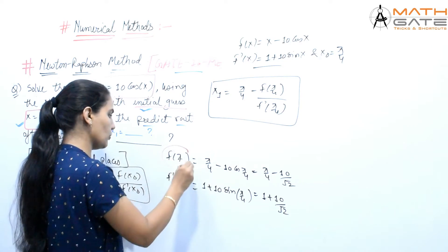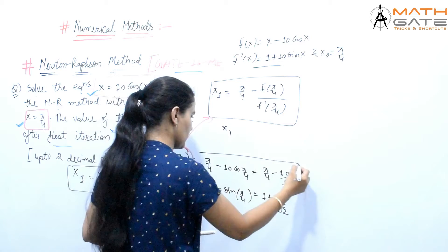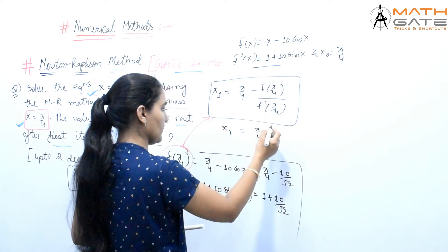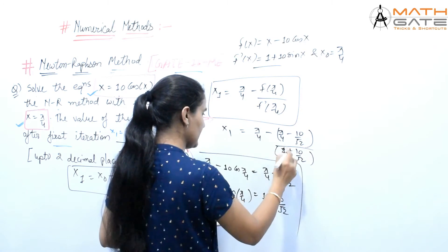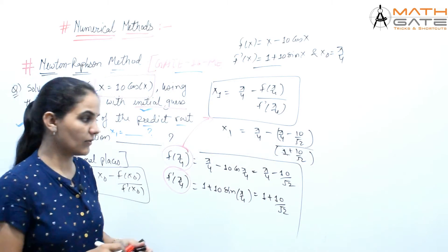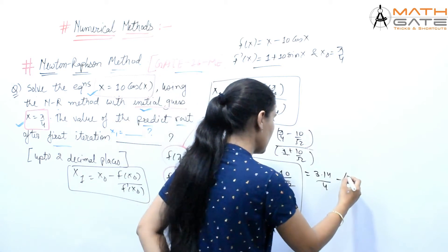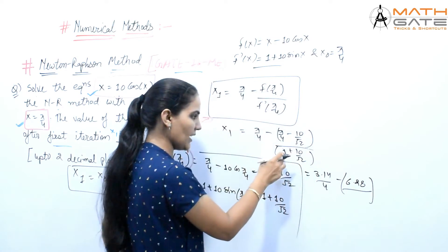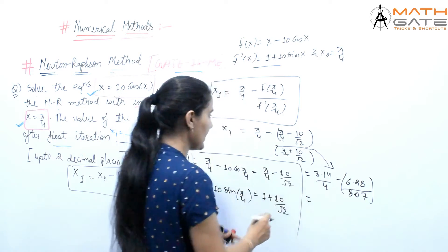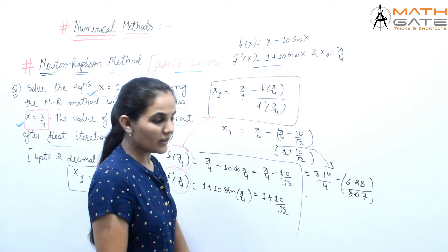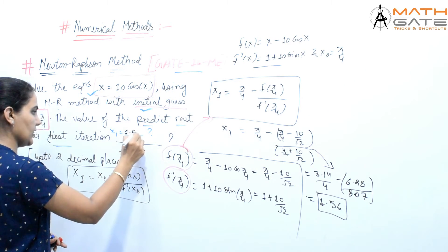We now have both values. Substituting into the formula: x1 = π/4 minus (π/4 minus 10/root 2) divided by (1 plus 10/root 2). Simplifying 3.14/4 minus 10/root 2 gives approximately 6.28 in the numerator context, and 1 plus 10/root 2 gives approximately 8.07. After solving, we get 3.14/4 leading to a final answer of x1 = 1.56 up to two decimal places.